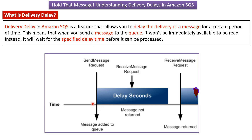For example, at a particular time a send message request comes and the message is added to the queue. Suppose the delay seconds is 30 seconds. Then during that 30 seconds, if a receive message request comes for that particular message, the message won't be returned. After the delay seconds, if a receive message request comes, then that particular message will be returned.